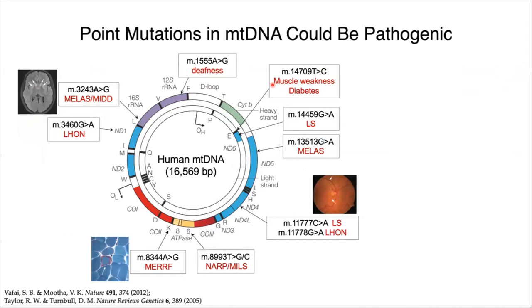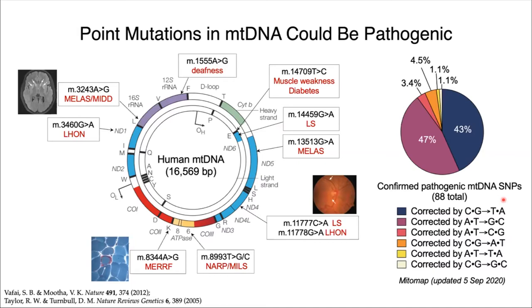Shown here are some examples of the grievous genetic conditions caused by mutations in the mtDNA, as well as the associated pathogenic SNPs. There are many other point mutations that have yet to be characterized for an association to a particular disease. But out of the confirmed pathogenic mitochondrial DNA SNPs, about more than 90% of them could, in principle, be corrected by a precise CG to TA edit or an AT to GC edit.